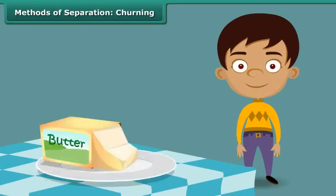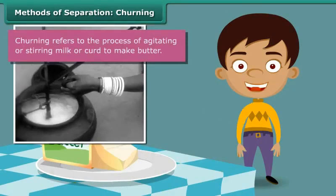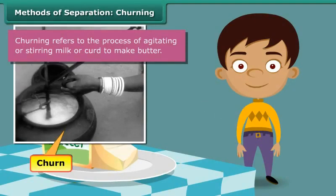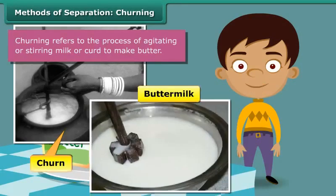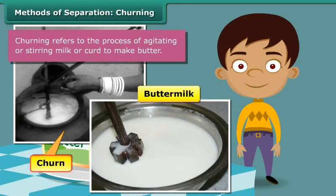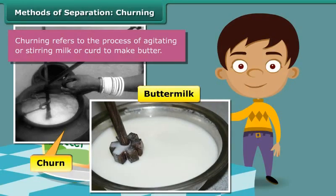This is butter. Do you know how butter is made? When milk is stirred vigorously in a churn, butter is obtained. The liquid left behind is the tasty, nutritive buttermilk that is relished by many as a refreshing summer drink. Do you see that two useful components emerge from a mixture when this method of separation is employed?